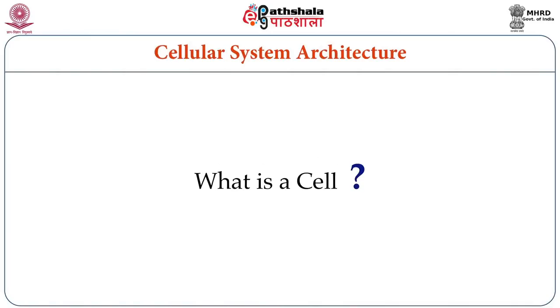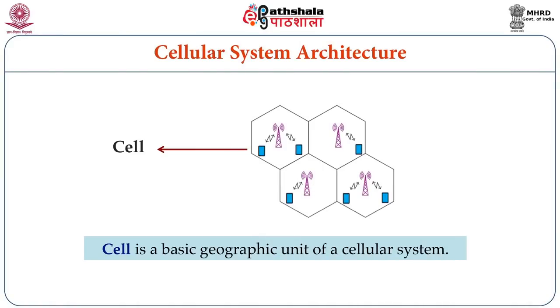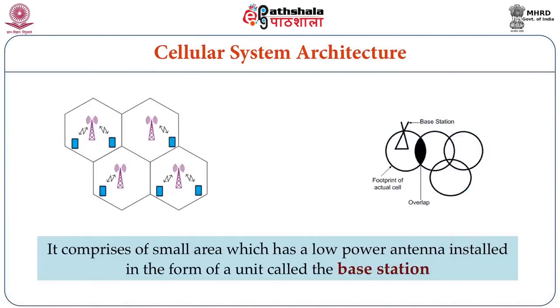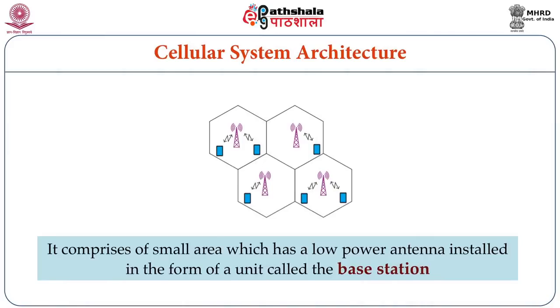A cell is a basic geographical unit of a cellular system. It comprises a small area — not a physical area but a logical area formed when the power of the antenna is adjusted. It is a small area which has a low-power antenna installed in the form of a unit called a base station. The location of the base station can be at the center of the cell or, in some cases, at the periphery of the cell. The radiation of the antenna is expected to be isotropic in nature, so the cells formed should be circular and the antenna should ideally be at the center.